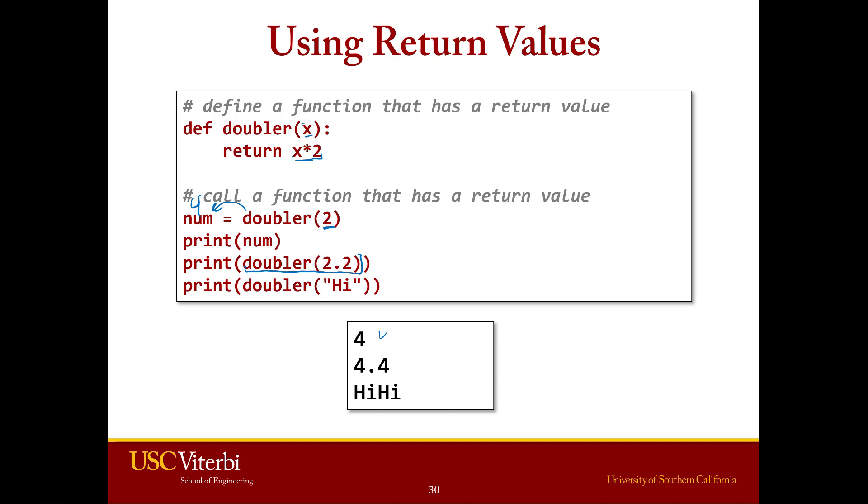Or you can just use doubler directly, doubler 2.2. Again, it's going to take 2.2, going to multiply it by 2 and it's going to return it, which is where you get 4.4. And here's the example we saw earlier, where if you do high, it's going to add them together and you'll get high high. So you can store a value that's returned in a variable like this, or you can just print it directly with the print function.